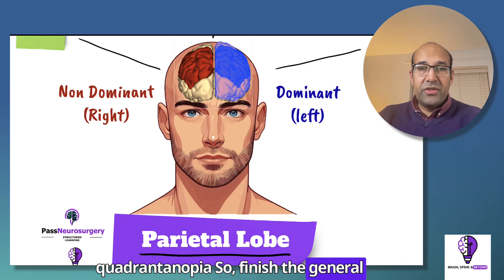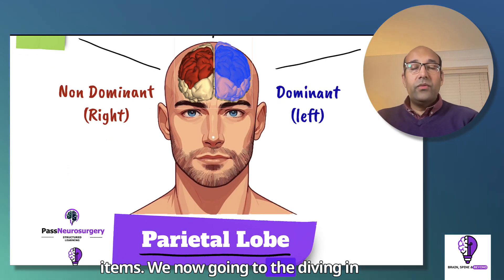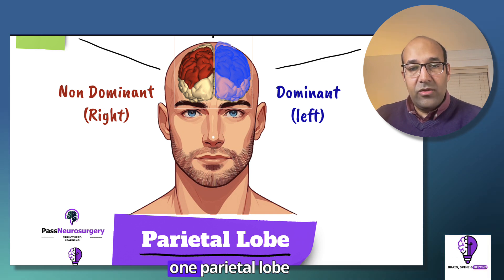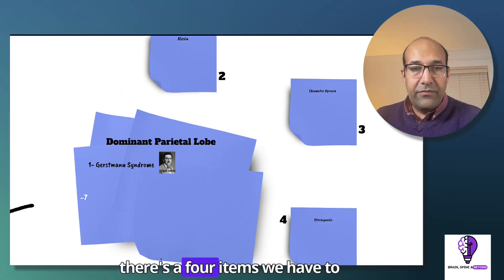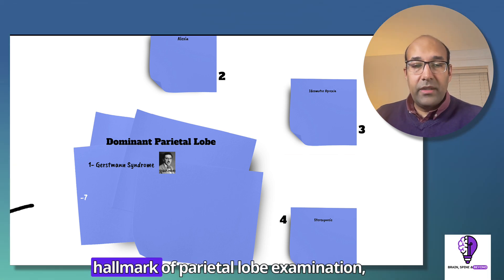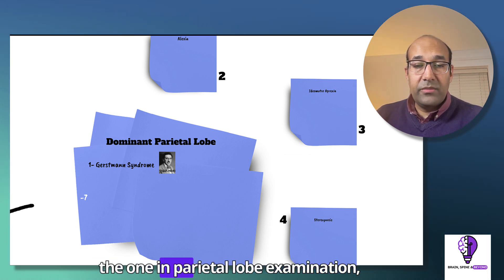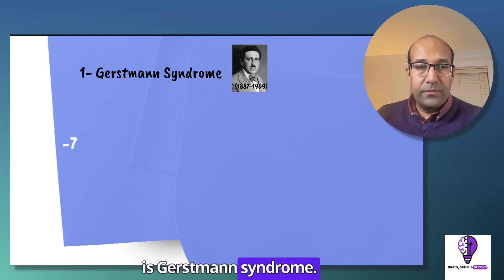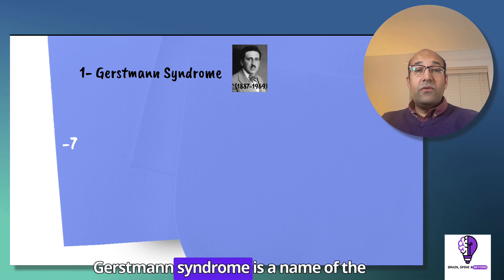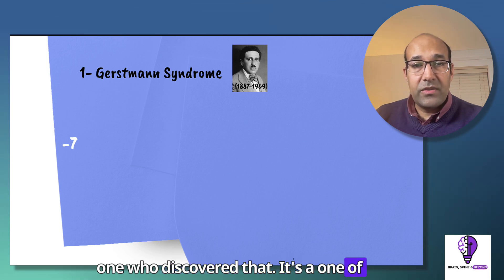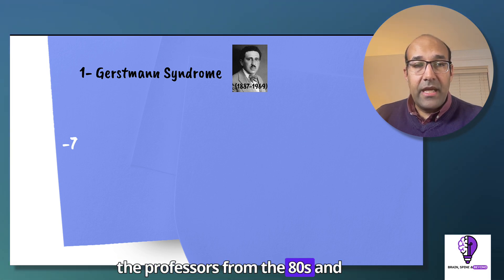We'll now dive into the dominant parietal lobe. In the dominant parietal lobe, there are four items to discuss. The first, which is the hallmark of dominant parietal lobe examination, is Gerstmann syndrome — named after the one who discovered it, a professor from the 1980s. Gerstmann syndrome has four criteria.